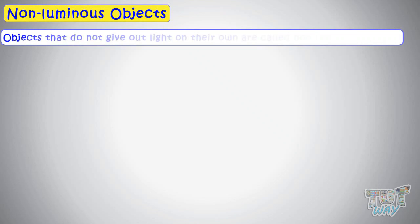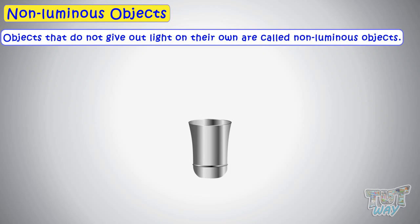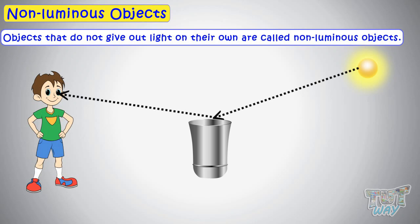Now let's see non-luminous objects. Objects that do not give out light on their own are called non-luminous objects. This glass does not emit or give out light on its own but it is reflecting the light falling on it, because of which we can see it. So it's a non-luminous object.